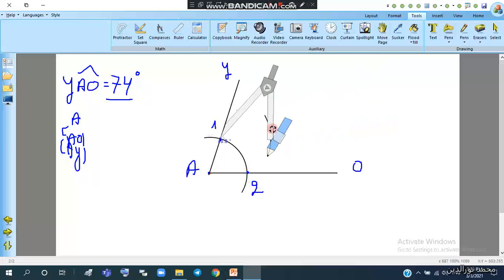We draw an arc, put the dry point on point 2, with the same opening of the compass. Don't tighten or widen the opening. Then draw another arc. These two arcs intersect at this point.